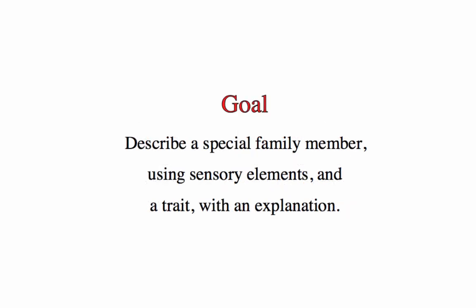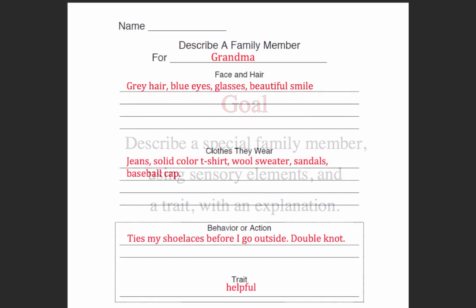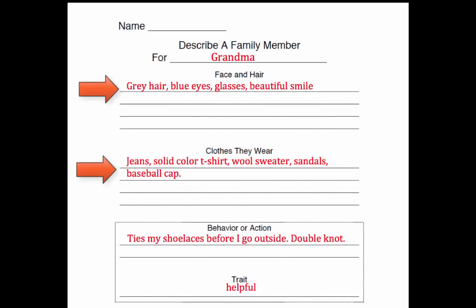The goal in this writing assignment is to describe a member of your family. You will give a physical description using details about their face and hair and about the clothes they wear. This part will be like the first two stories you wrote. In the second part, you will describe your special family member with traits and explanations.